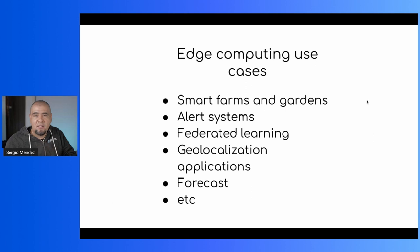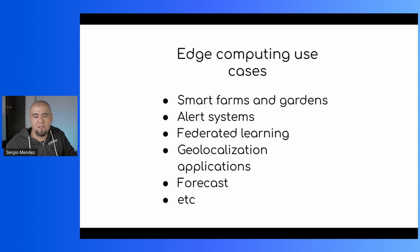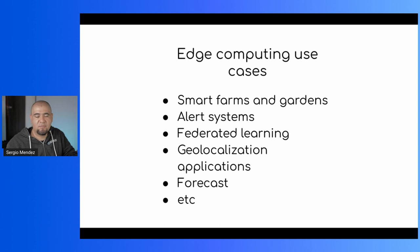Some examples of use cases for edge computing could be smart farms, smart gardens, federated learning to pick data from different distributed sources and create machine learning models, geolocation applications, geotracking, predictions and forecasts. Companies are starting to migrate to this philosophy to process information near the edge in order to improve user experience.